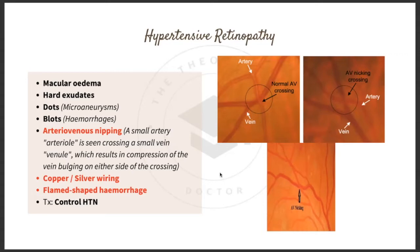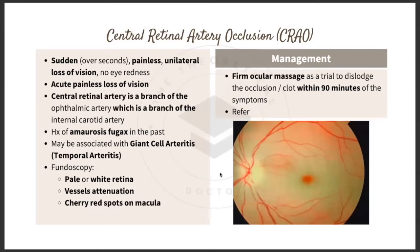Central retinal artery occlusion (CRAO) presents as sudden, painless, unilateral loss of vision occurring over seconds, with no eye redness. The central retinal artery is a branch of the ophthalmic artery, which branches from the internal carotid artery. The patient may have a history of amaurosis fugax or association with giant cell arteritis (temporal arteritis).